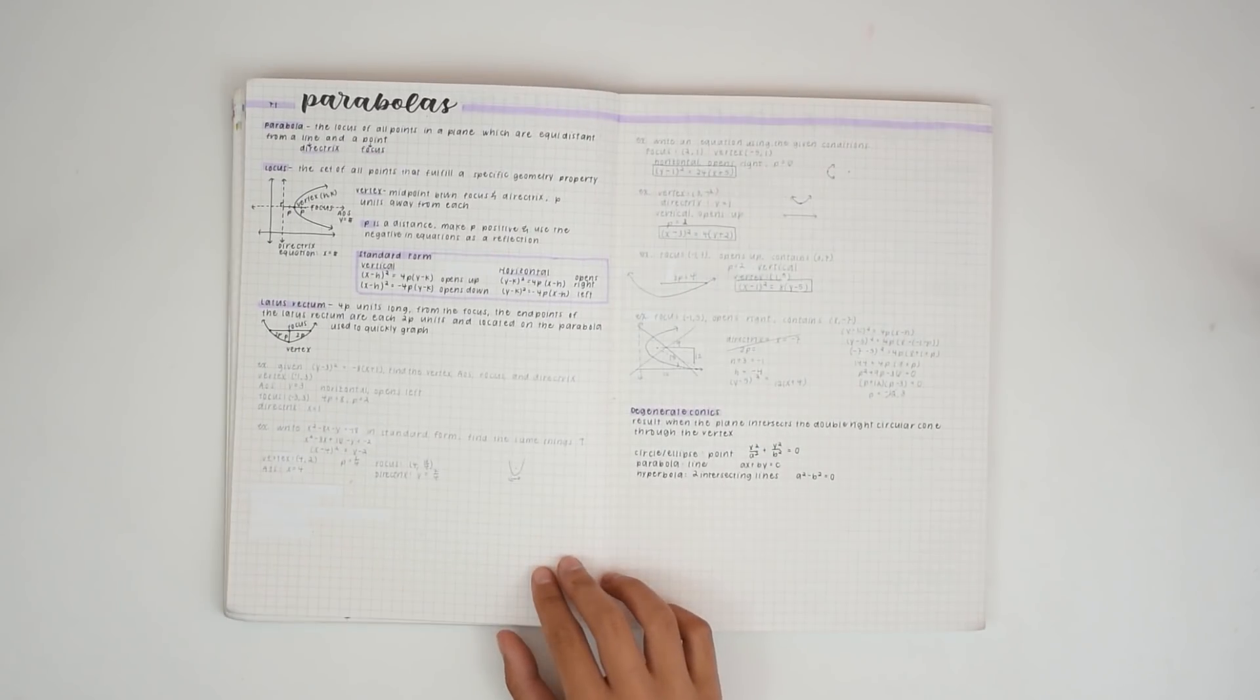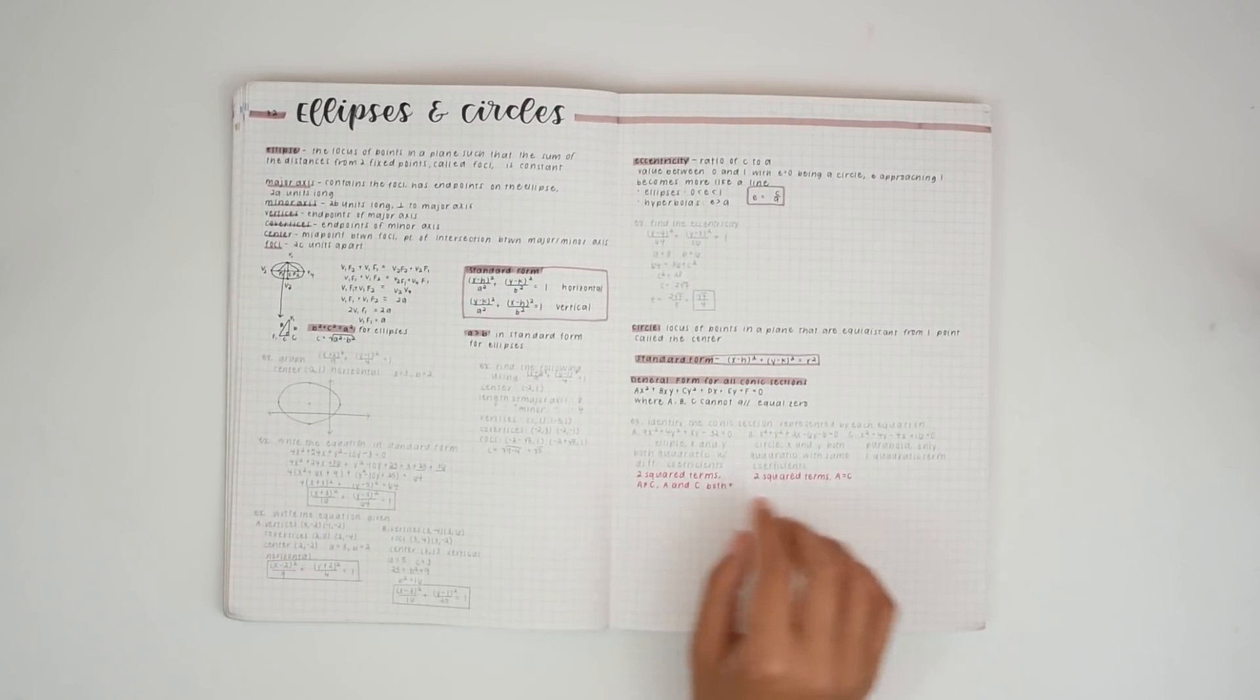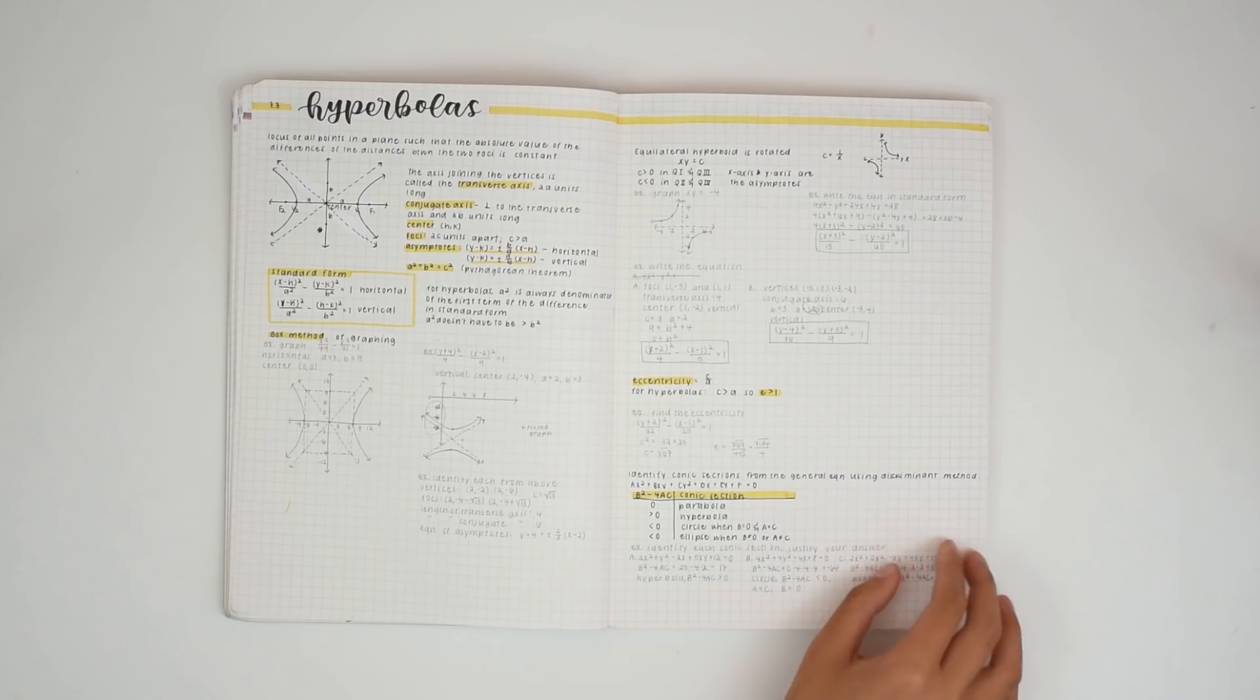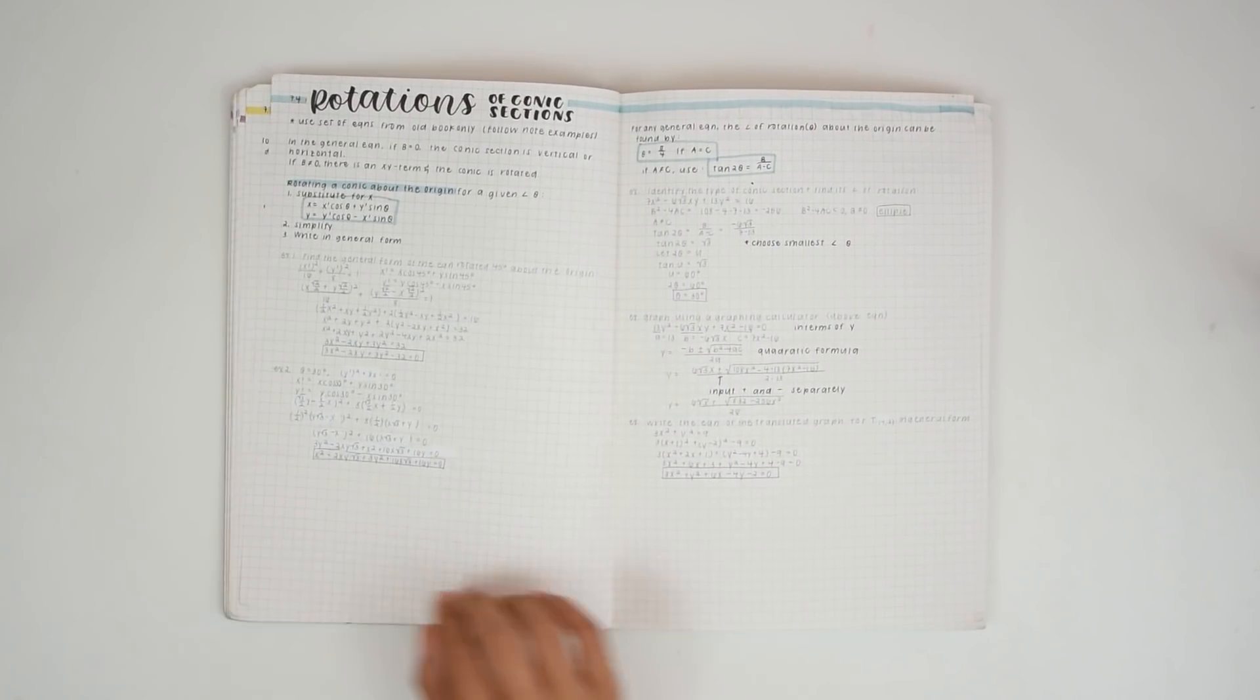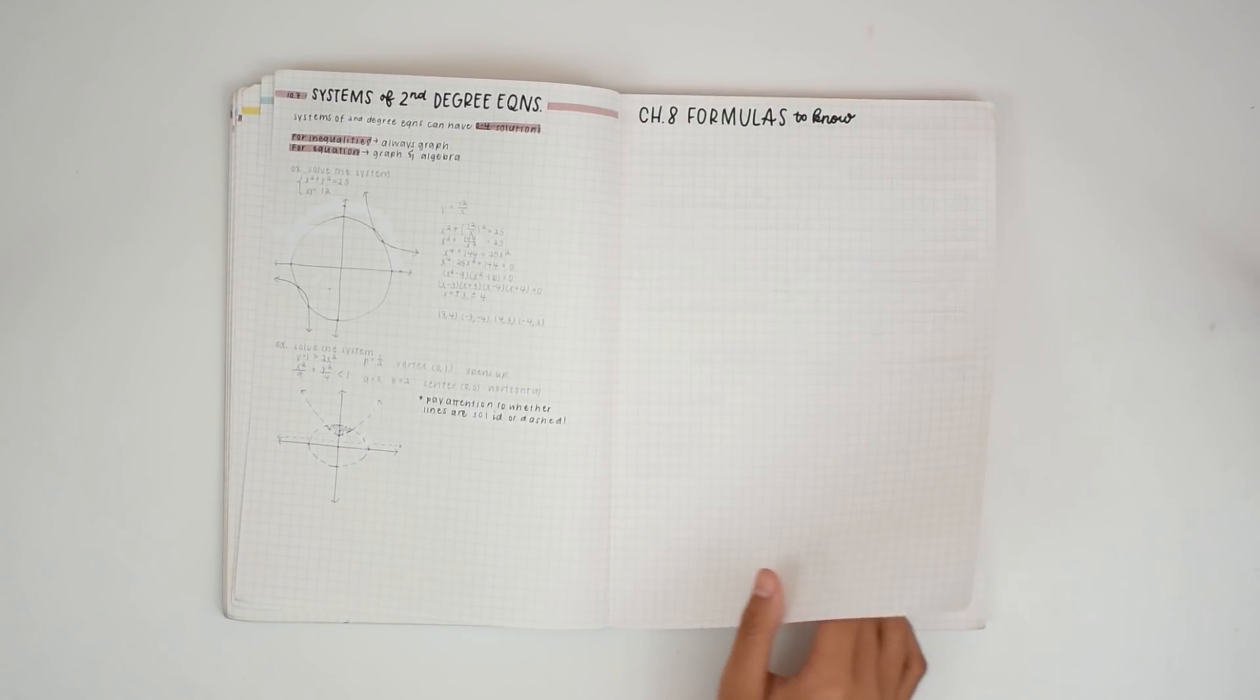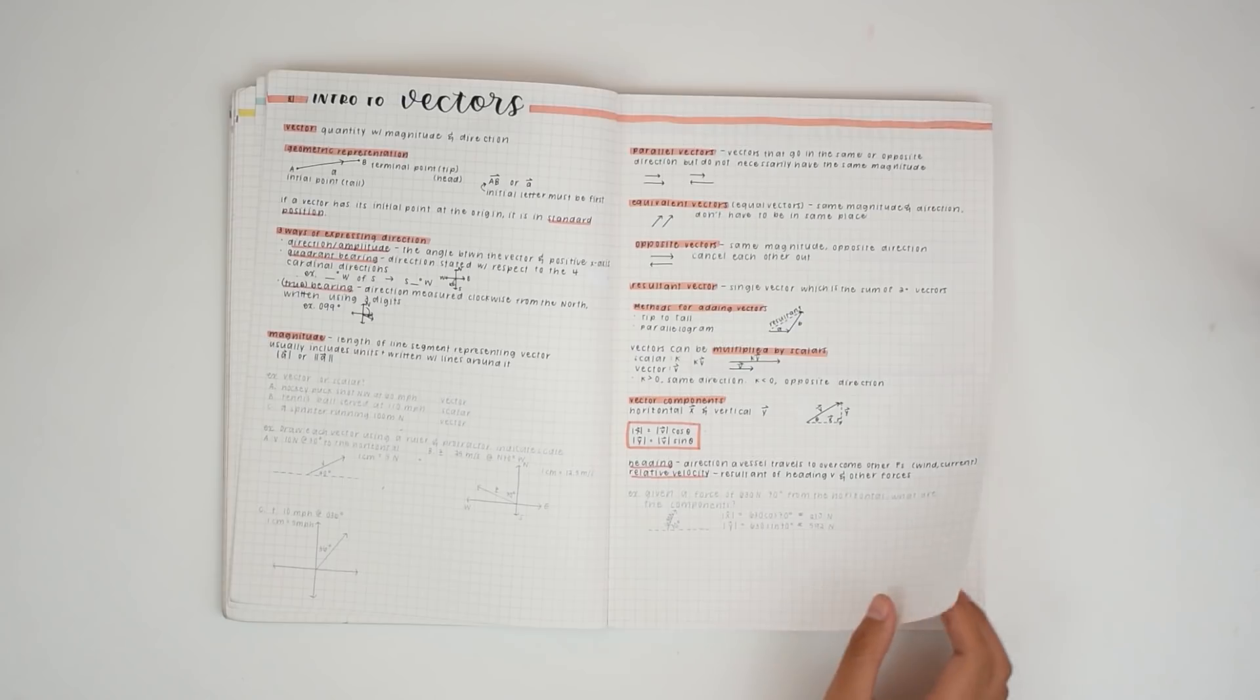And speaking of quizzes and tests, make sure you check your answers whenever you can. And it helps to do a method of solving the problem, but in reverse. For example, if you found the critical points of a conic section based on its equation, you can write the equation of a conic section based on those critical points and see if they match up. Or more obviously, if you solved an equation, just substitute your solution back in.